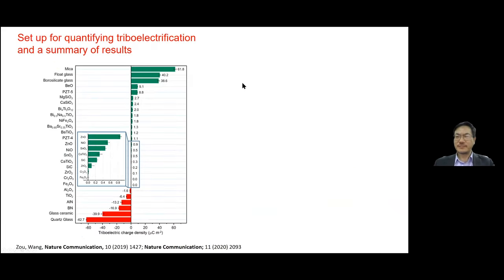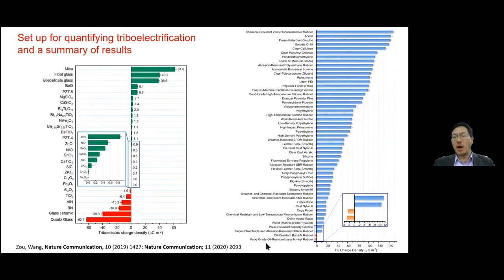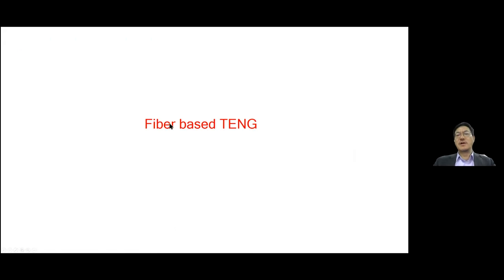We recently published two papers measuring surface charge density for 35 different oxide-themed materials — some with positive charge, some with negative — and 55 polymer materials, giving for the first time quantified numbers on triboelectric surface charge density. Nanogenerators can use any material: fiber materials, anything. Now let me start with fiber material-based TENG.